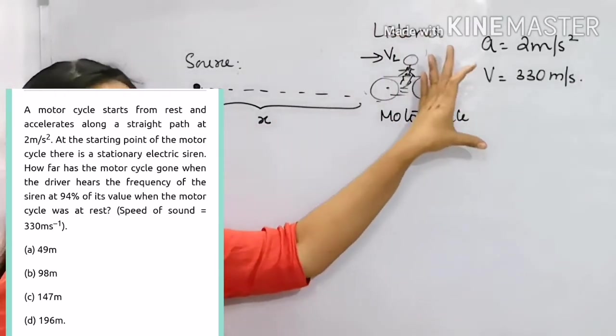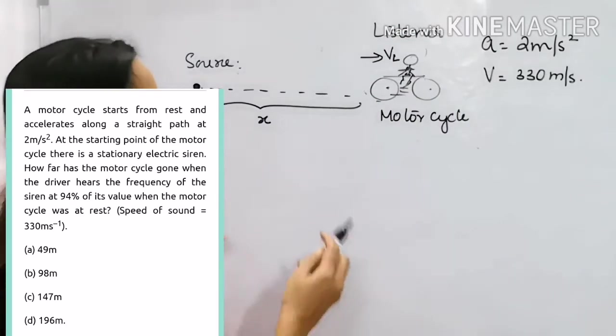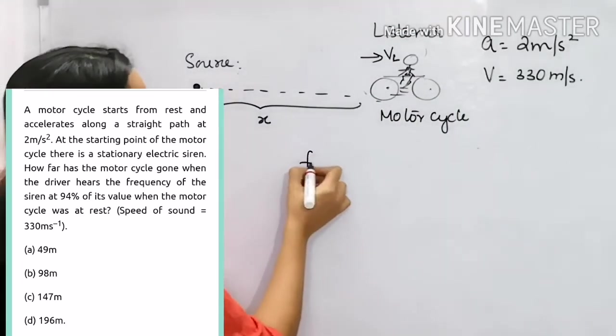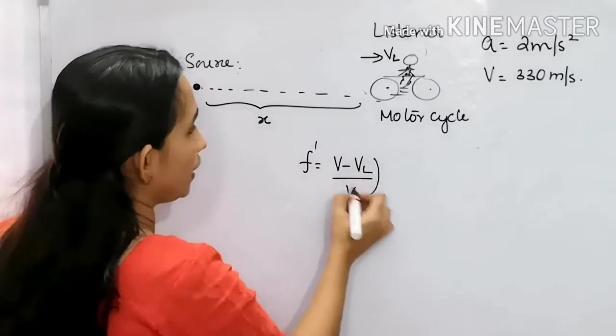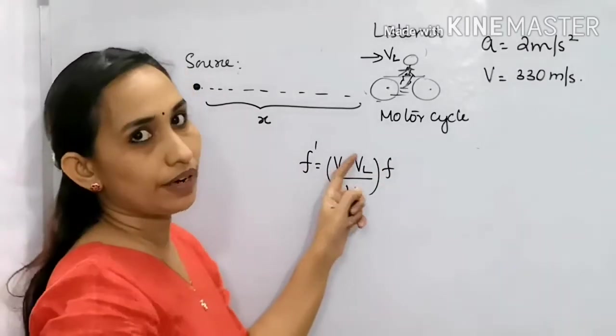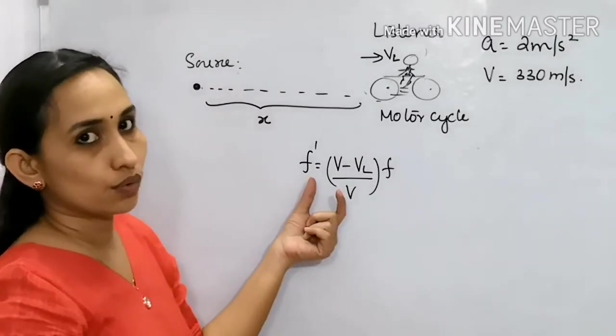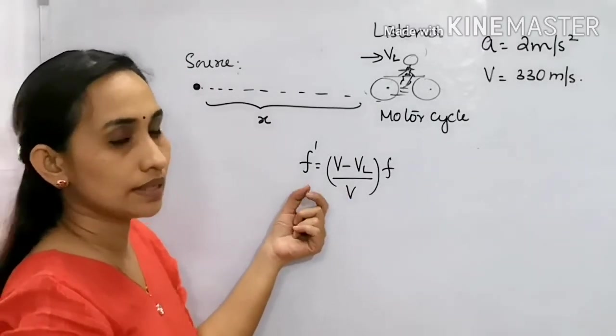This is the listener moving away. Now, Doppler effect is coming. Listener moving away. Apparent frequency in the equation: V minus VL divided by V into F.